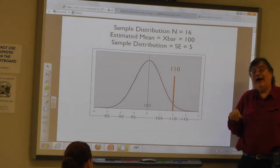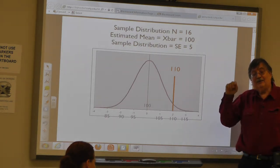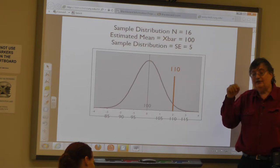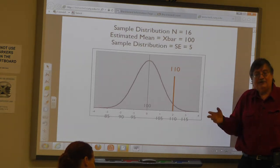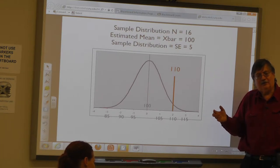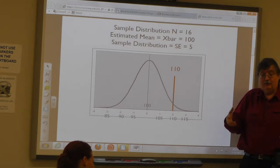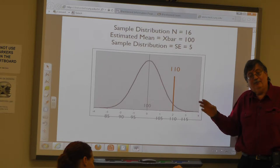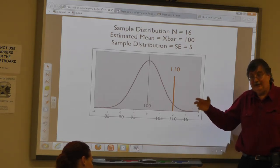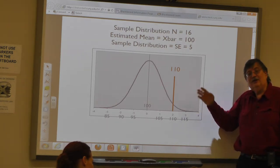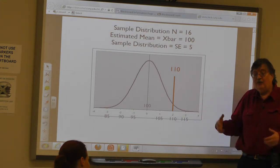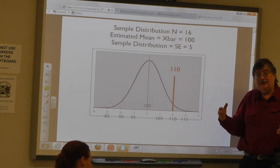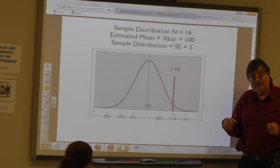That is called our alpha error — the probability we're willing to accept that we could make an error. It means that we're pretty sure we're right, but there is a finite possibility — not a small one, a decent 5% chance — that we could say two results are statistically different when indeed they don't wind up being different.